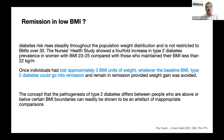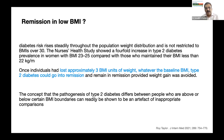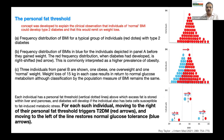But what about people with low BMI — is reversal only for obese people? New thoughts have completely revolutionized the field. Diabetes risk steadily increases with increasing weight; however, the Nurses' Health Study showed a four-fold increase in type 2 diabetes prevalence with a BMI between 23 to 25 compared with those with BMI of 22 or less. Even for a lean person, if they have gained weight, their chance of developing diabetes increases. And once individuals have lost approximately three BMI units of weight, whatever the baseline BMI, type 2 diabetes would go into remission.